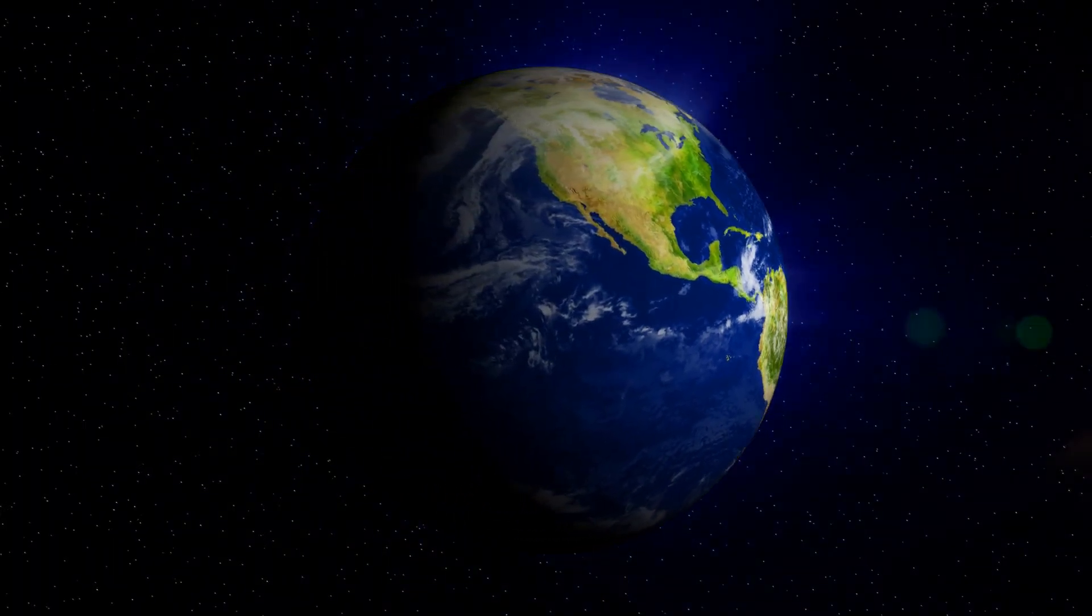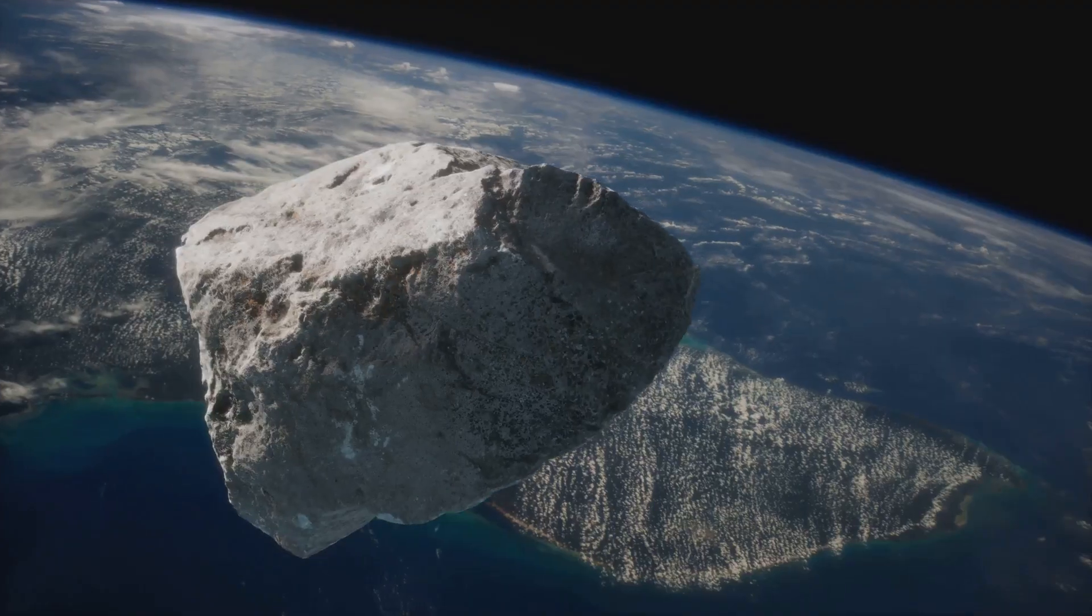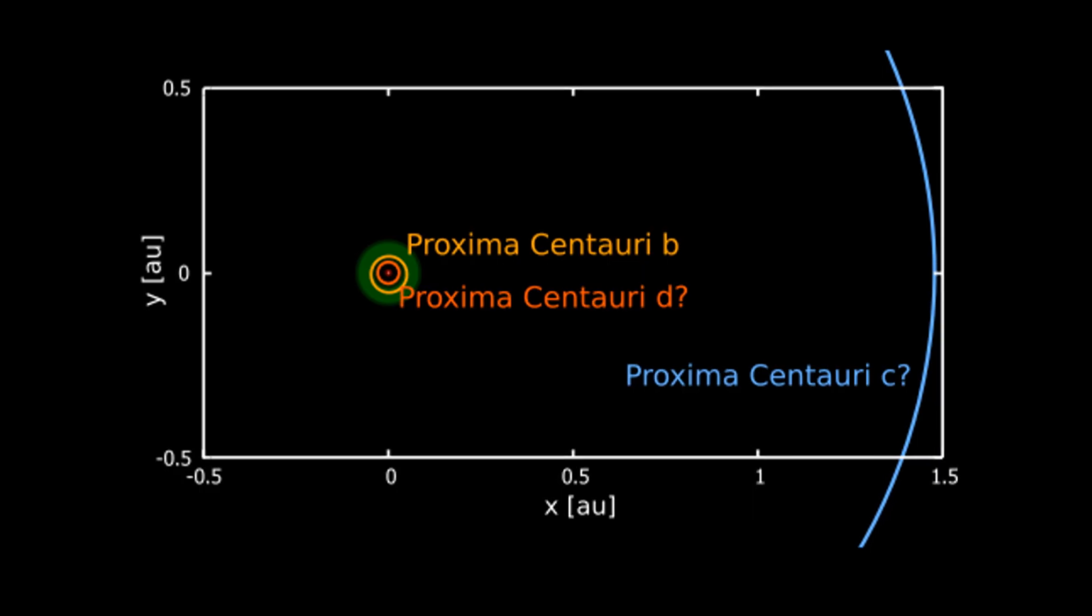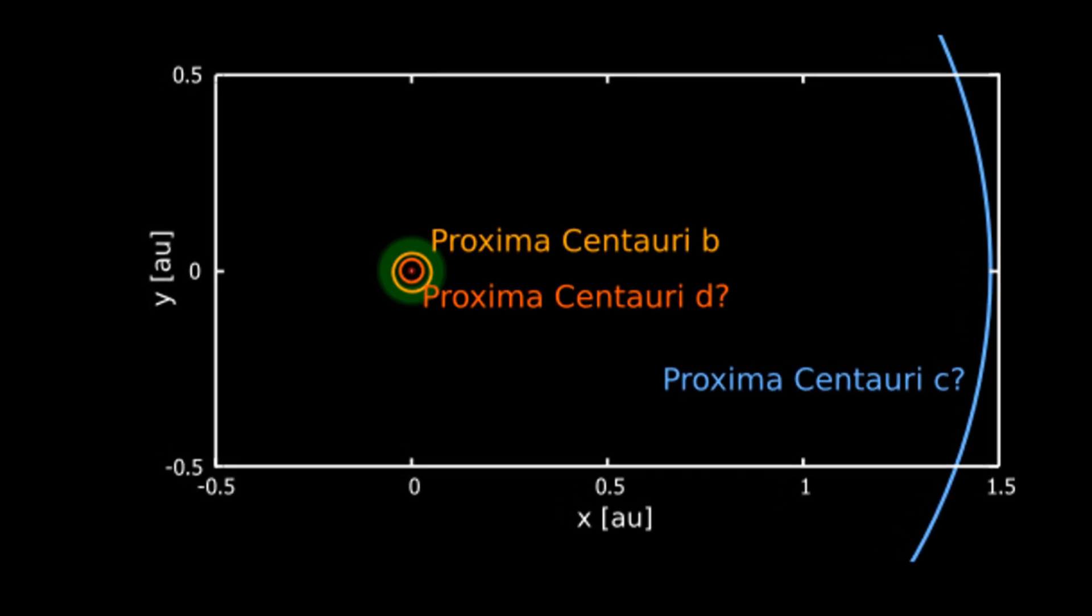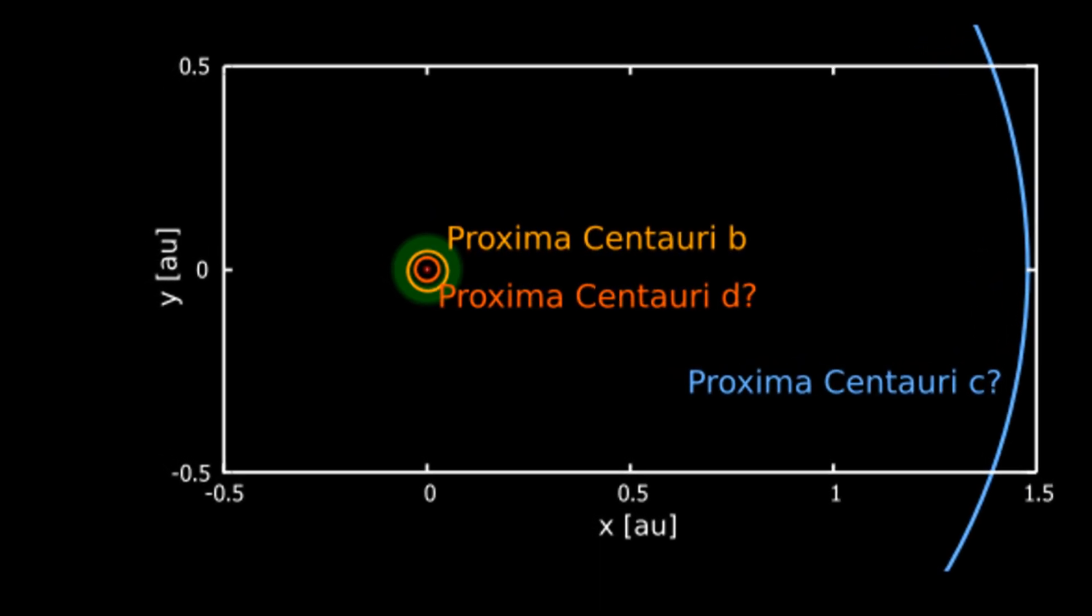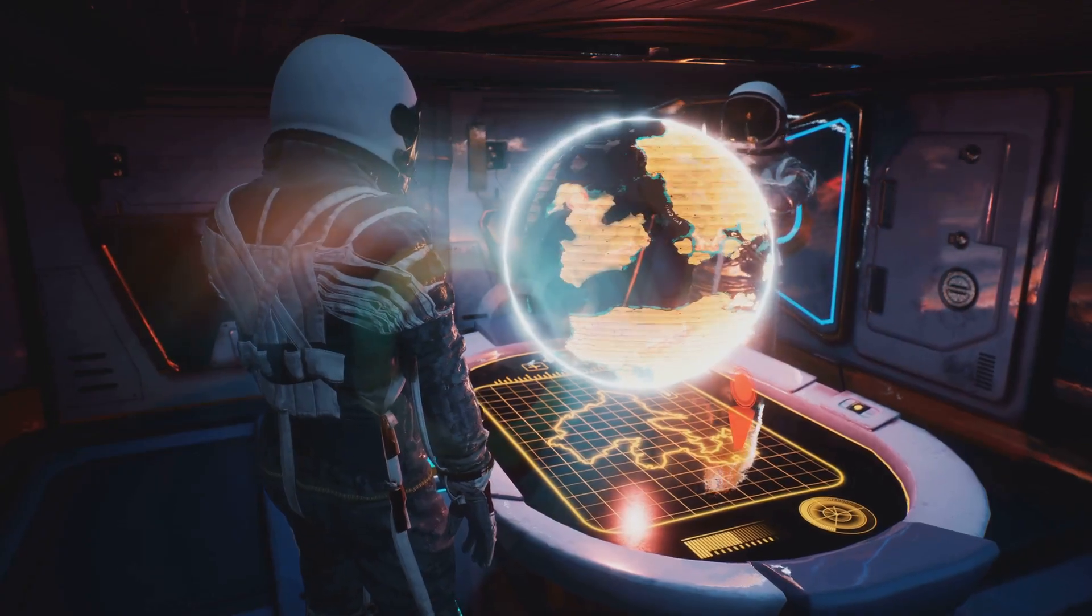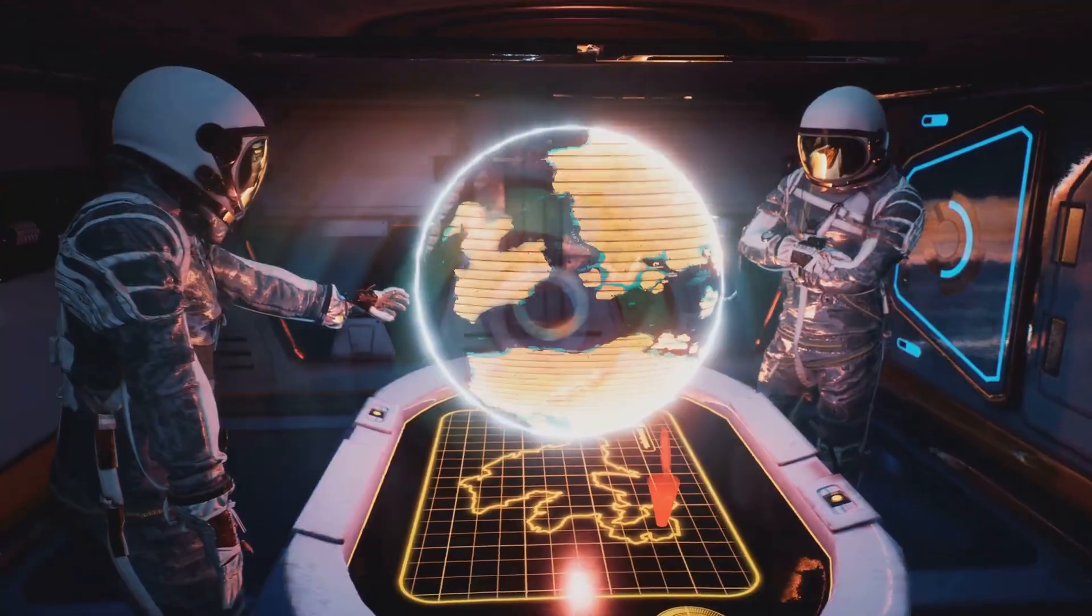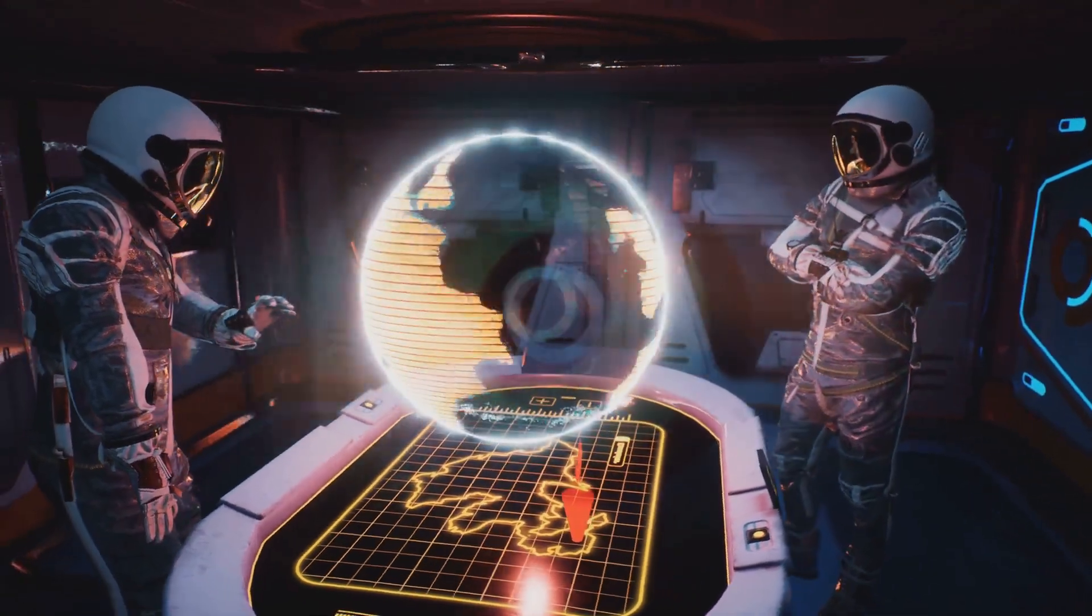Some scientists see it this way. If all of humanity lives on one planet, we're a single asteroid, supervolcano, or nuclear war away from extinction. A second home among the stars, that's insurance for the future of life itself. Living in another star system will change us, culturally, biologically, maybe even spiritually. The people born there will grow up with different skies, different day lengths, different stories. They'll still be human, but in a new way. A broader way.